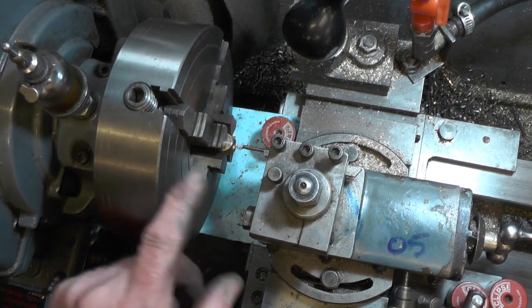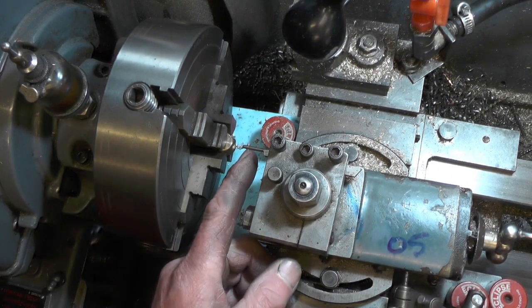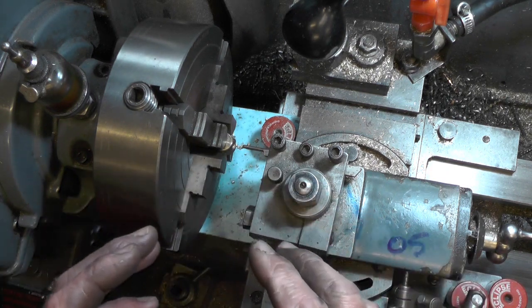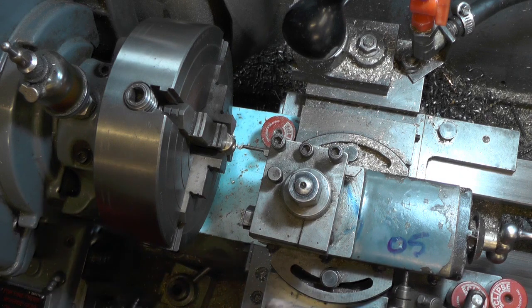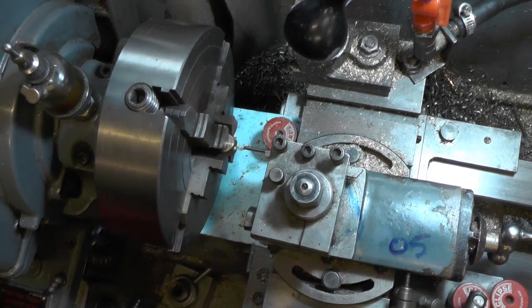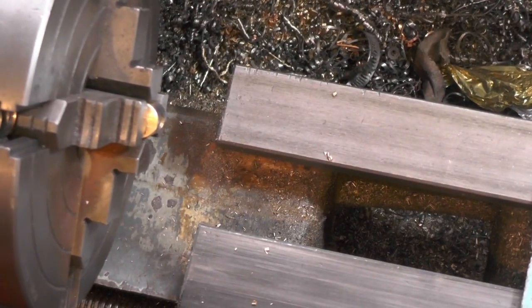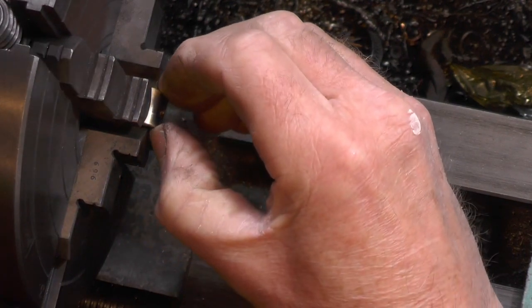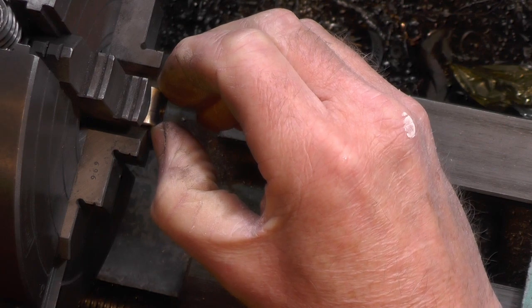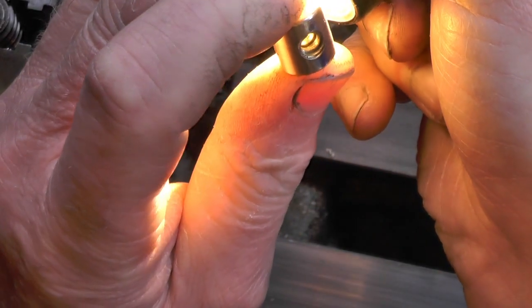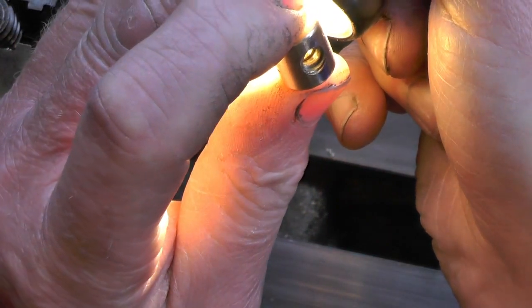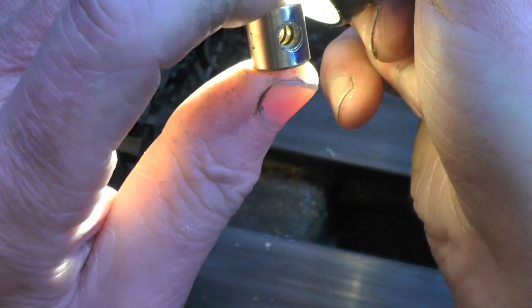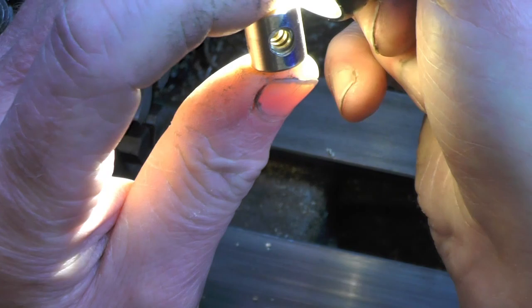Right, I'm down to my depth now, 62 thousandths. I'm just going to take a few spring cuts just to get the spring out of the tool, so I can ensure that the thread in the nut is parallel. Then once I've done that, just about three or four spring cuts, I'm going to make the screw to fit the nut. I'm going to take a few spring cuts out.